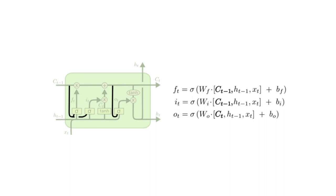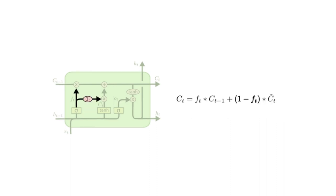Another variation is to use coupled forget and input gates. Instead of separately deciding what to forget and what we should add new information to, we make those decisions together. We only forget when we are going to input something in its place. We only input new values to the state when we forget something older.